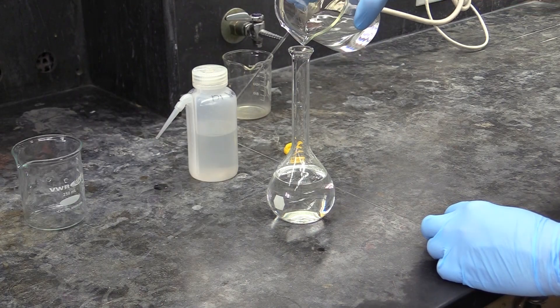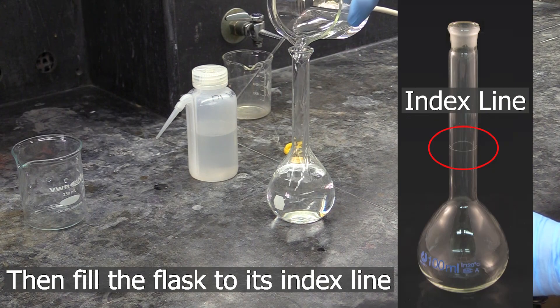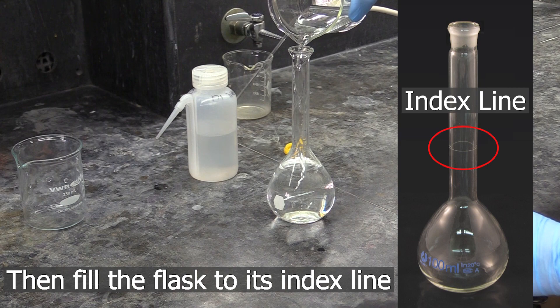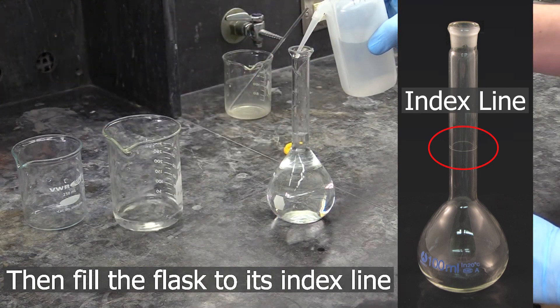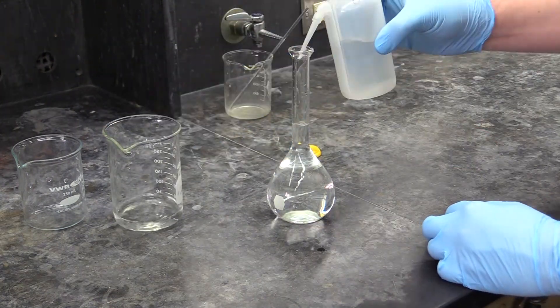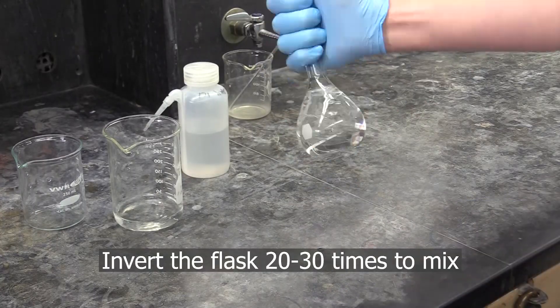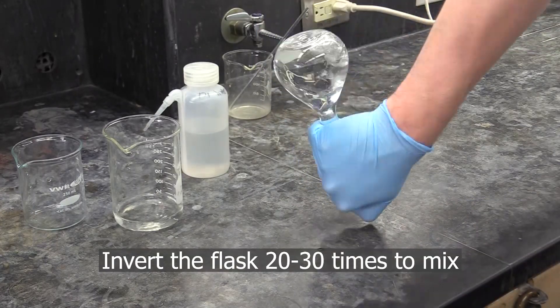Next, use more DI water to fill the flask to its index mark, which is this frosted band around its neck. Be careful when you do this, the level rises quickly when the liquid gets up into the neck. And finally, invert the flask about 20 to 30 times to thoroughly mix the contents.